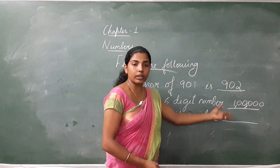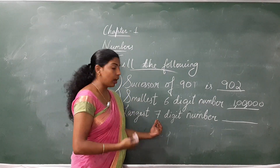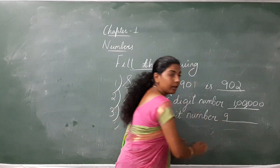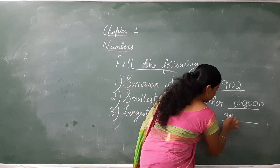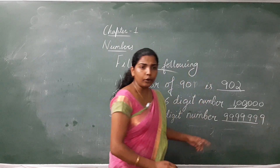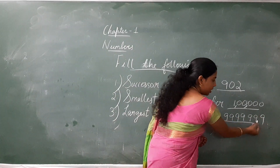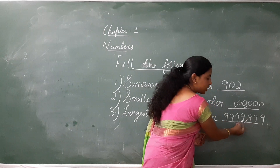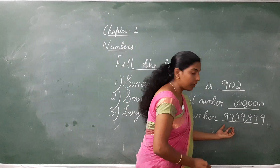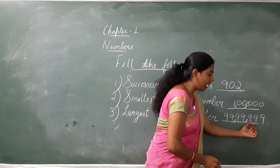Largest 7-digit number. How do you write the largest numbers? We need to write the largest 7-digit number, so just write 9, how many times? 7 times. Can you read this number? For that we have to put a comma after each period: ones, tens, hundred — comma — thousand, ten thousand — comma — lakh, ten lakh. So the number is 99 lakh, 99,999.